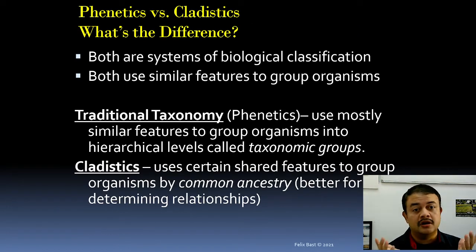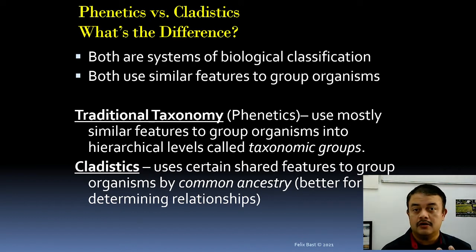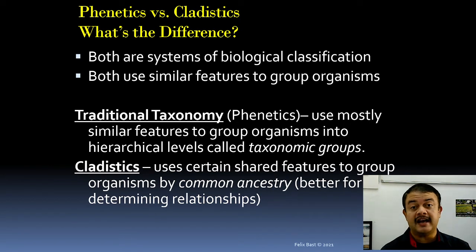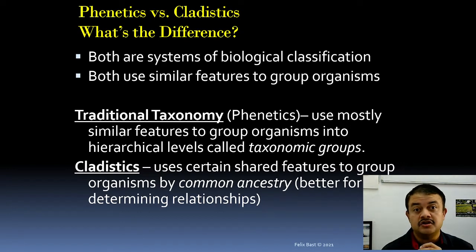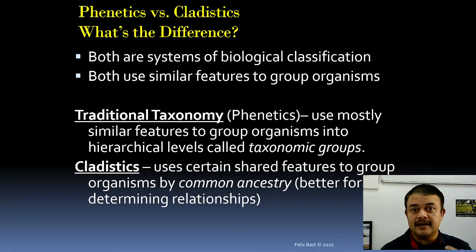The difference is that both phenetics and cladistics are biological classification systems using similar features to group organisms, but traditional taxonomy uses mostly similar morphological features to group organisms into hierarchical taxonomic groups. They don't differentiate between synapomorphic and plesiomorphic — ancestral versus derived — characters. Cladistics uses shared derived characters to group organisms by common ancestry, which is better for determining true relationships — like classifying words by etymology in linguistics.